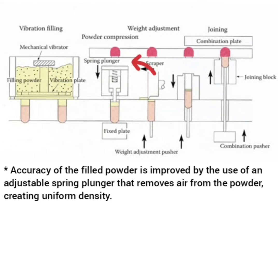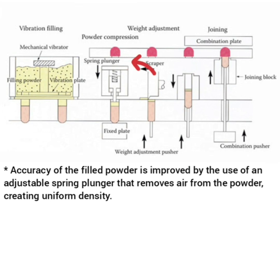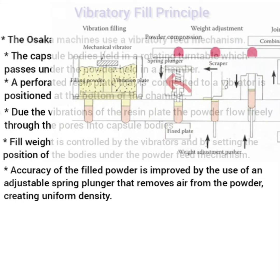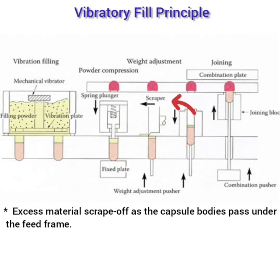The accuracy of the filled powder is improved by using a spring plunger. The spring plunger compresses the powder in the capsules slightly and removes any entrapped air, creating a uniform density. After powder compression, any excess material is removed.